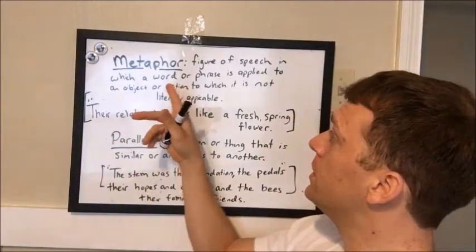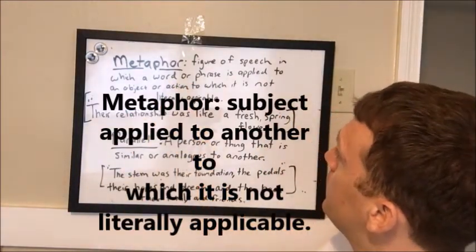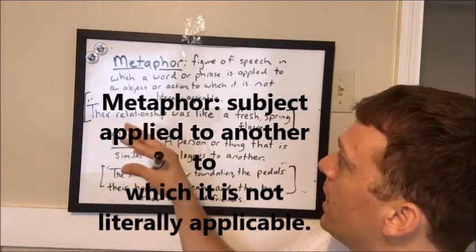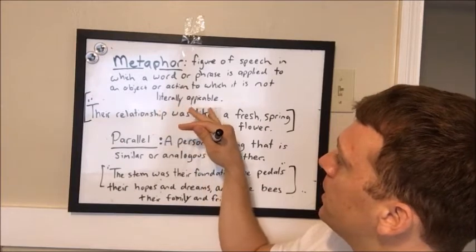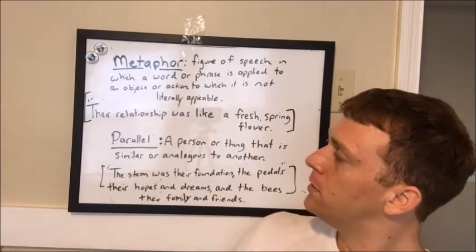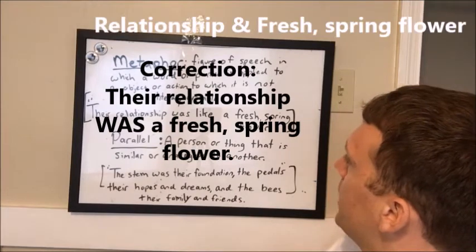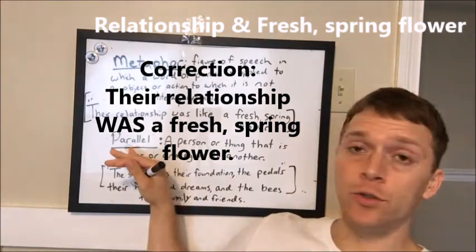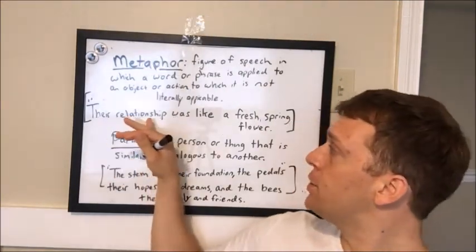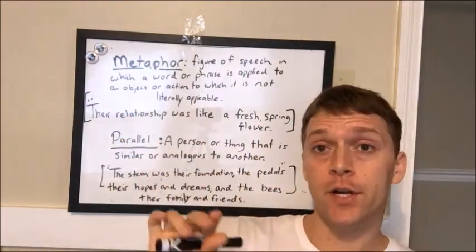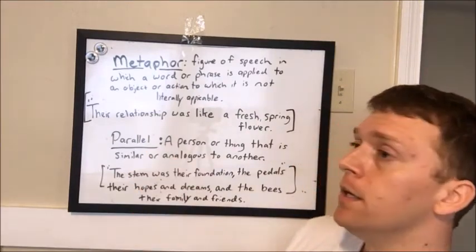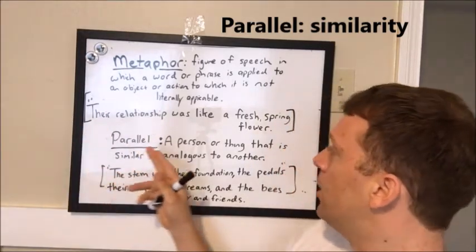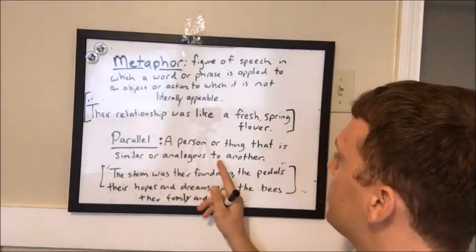The first of which is a metaphor, and that is a figure of speech in which a word or phrase is applied to an object or action to which it is not literally applicable. My example here is their relationship was like a fresh spring flower. There are no literal parallels between their relationship and a flower, but there are figurative parallels. A parallel is a similarity between one thing and another — a person or thing that is similar or analogous to another.